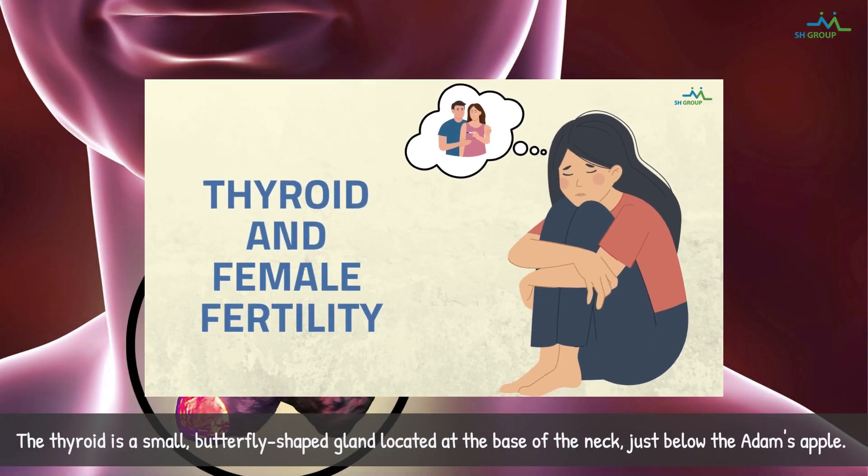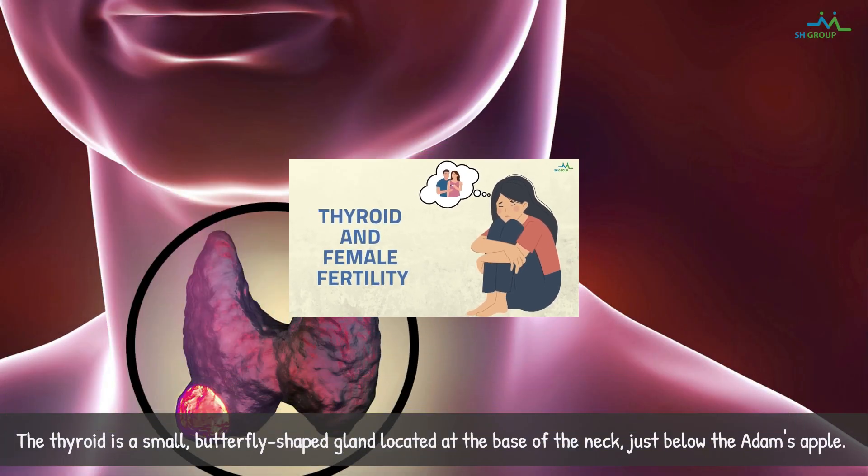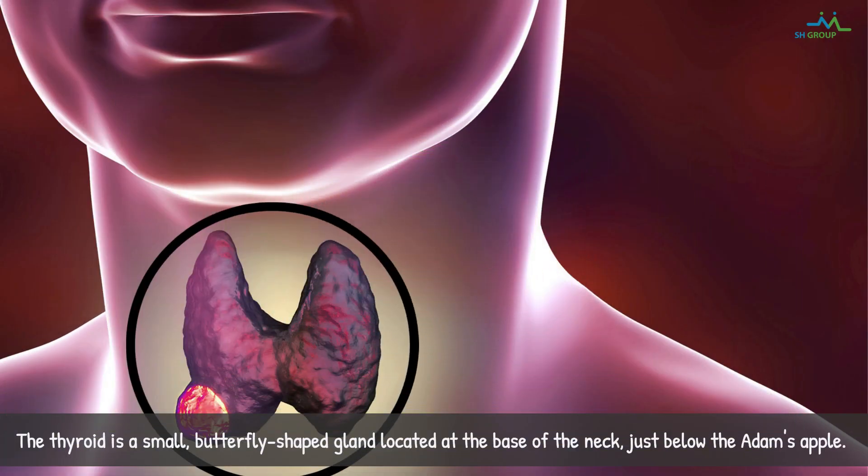The thyroid is a small butterfly-shaped gland located at the base of the neck, just below the Adam's apple.